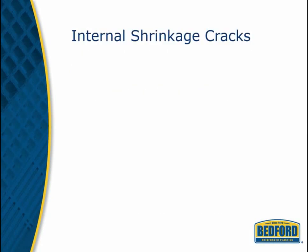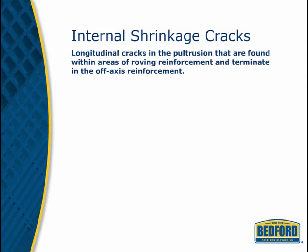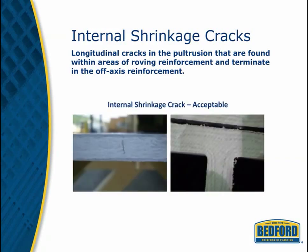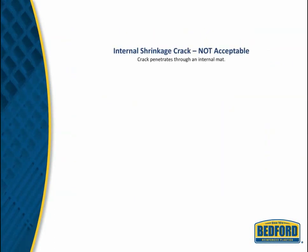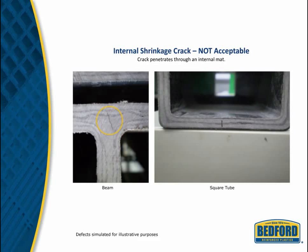Internal shrinkage cracks are longitudinal cracks in the pultrusion found within areas of roving reinforcement and in the off-axis reinforcement. These cracks are permitted if the crack does not reach the surface of the product and if the product meets test requirements. Internal cracks are not acceptable when they penetrate through an internal mat or center layer of reinforcement.